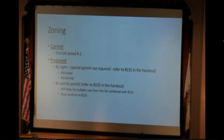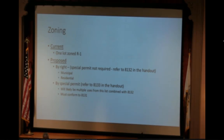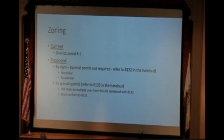Currently it's one lot — one huge lot — zoned R1, which is residential, and it's a school at this point. By-right basically means you don't need a special permit. You just say we're going to do municipal, we're going to do residential. There are no additional approvals required once we get to that point in the process, if that's the decision that the Board of Selectmen makes.